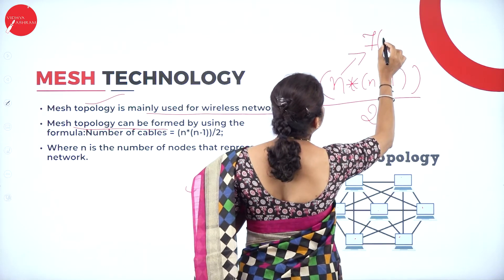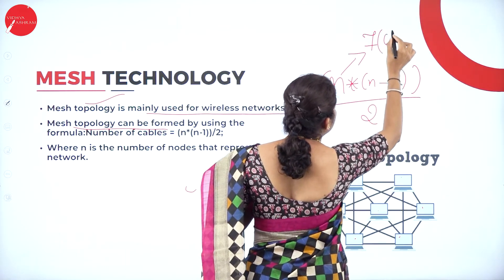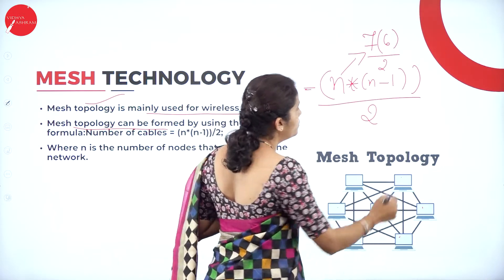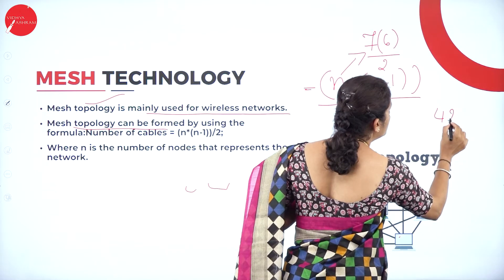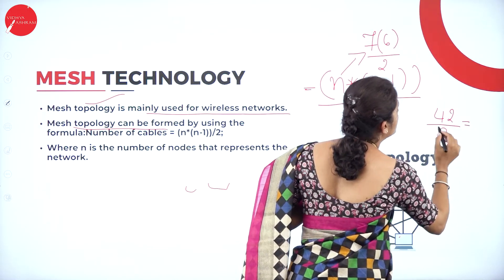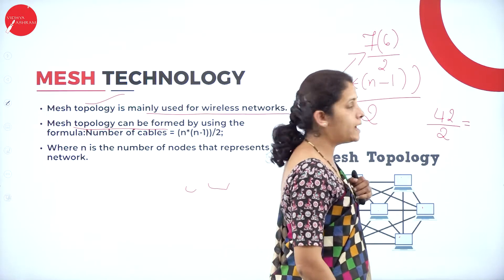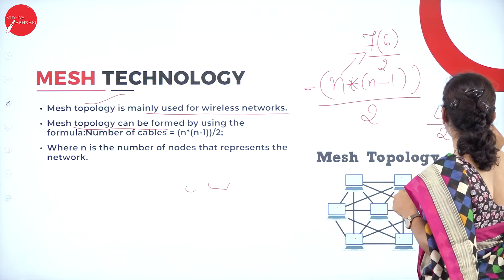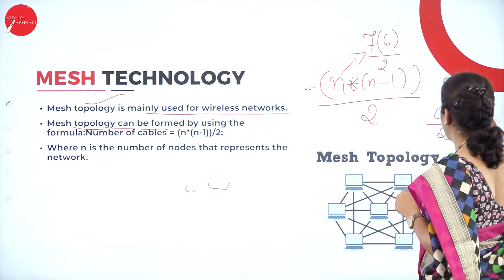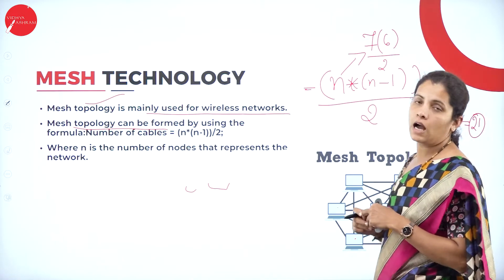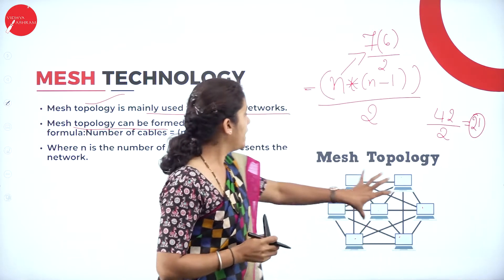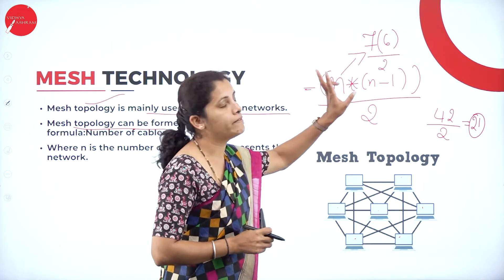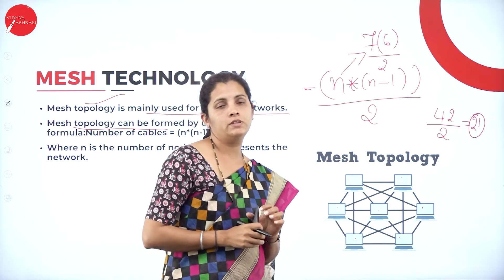Using the formula: 7 × (7 − 1) / 2 = 7 × 6 / 2 = 42 / 2 = 21. So 21 cables are required. According to the diagram, we require 21 cables to connect 7 different computer systems.